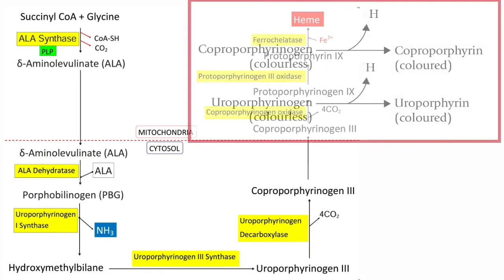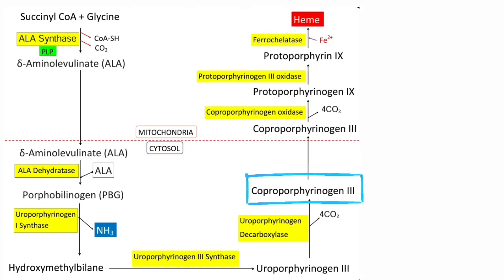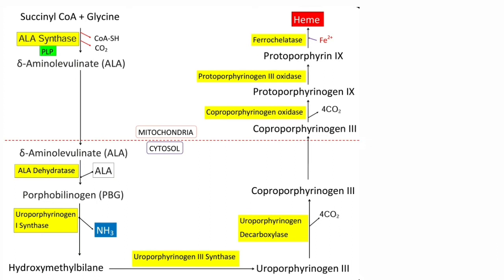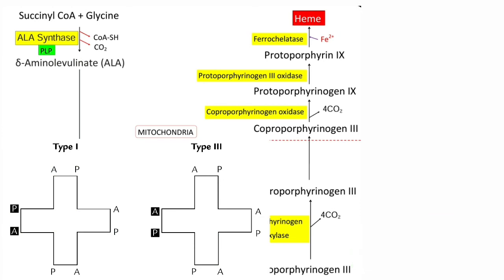In the next step, coproporphyrinogen-3 is formed from uroporphyrinogen-3 by decarboxylation. This reaction is catalyzed by uroporphyrinogen-3 decarboxylase, which decarboxylates all four acetate side chains to methyl groups. As a result, four carbon dioxide molecules are eliminated. Coproporphyrinogen-3 is formed in the cytosol and then diffuses into the mitochondria. From the next step onwards, the remaining reactions take place in the mitochondria. Coproporphyrinogen-3 is oxidized to protoporphyrinogen-9 by coproporphyrinogen oxidase, which specifically acts only on the type-3 series and not on the type-1 series.